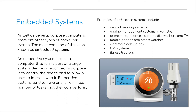So what is an embedded system? Well, as well as general purpose computers there are other types of computer systems. The most common of these are known as embedded systems. An embedded system is a small computer that forms part of a larger system, device or machine. Its purpose is to control the device and to allow a user to interact with it. Embedded systems tend to have one or a limited number of tasks that they can perform. Here's an example of a central heating system whereby everything is controlled from a little touchpad or even from your mobile phone now.